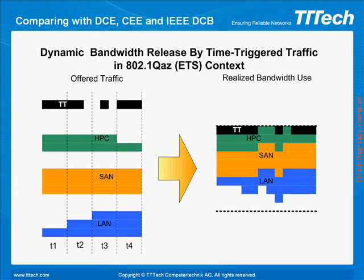This is essential in applications where overloading of computing and networking resources cannot be predicted well, but critical distributed functions must work in all cases. In contrast to circuit switching where the bandwidth reservation is fixed and independent of the link load, time-triggered streams can release unused bandwidth immediately for other asynchronous traffic.